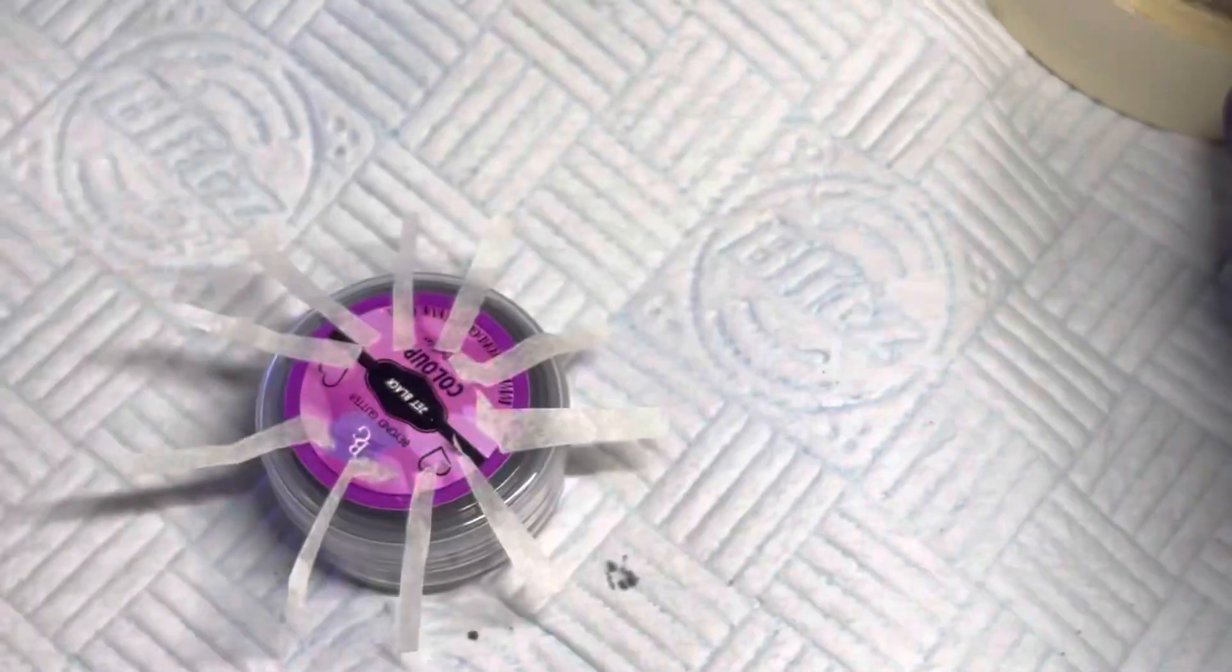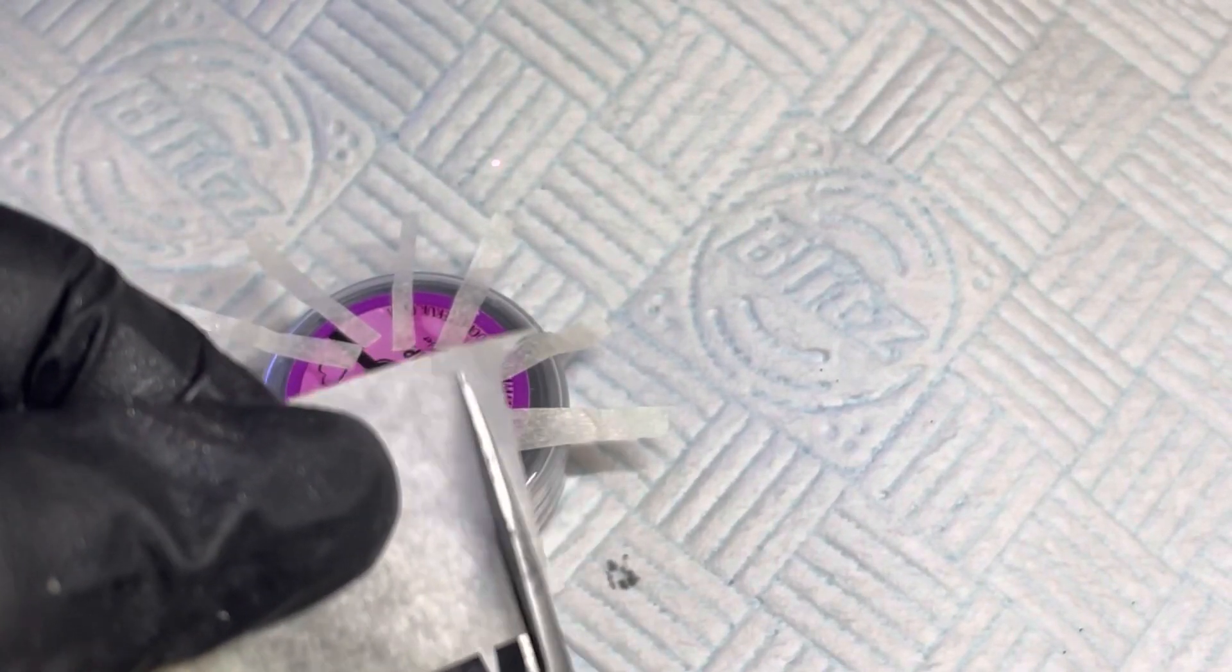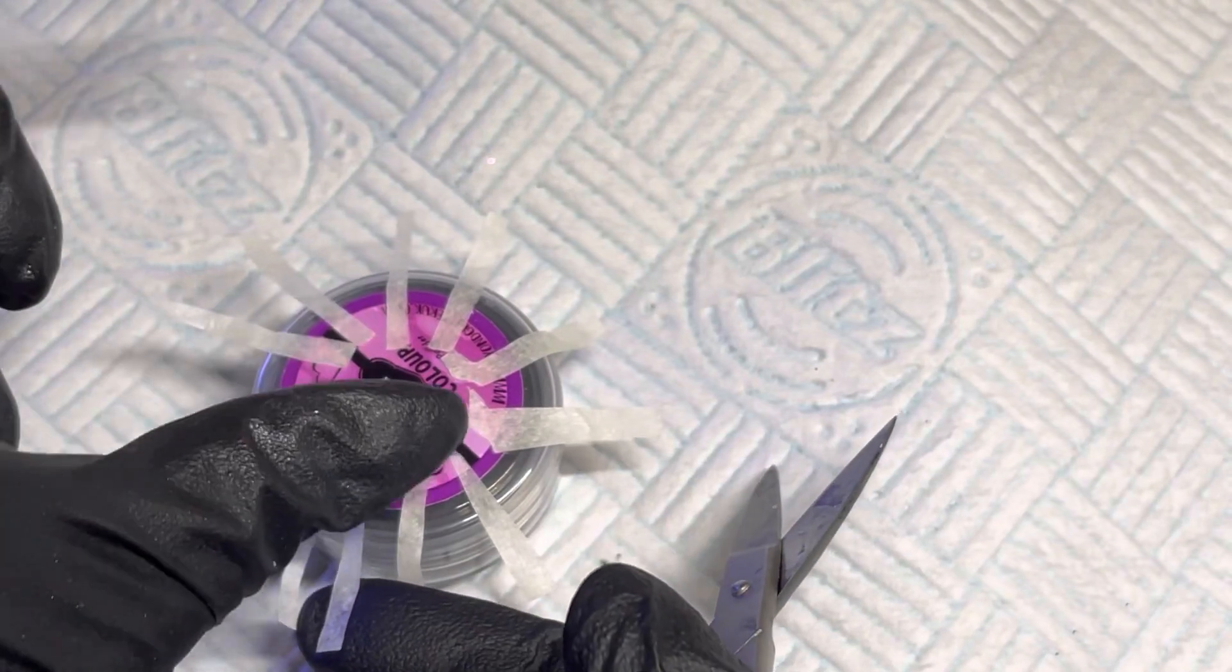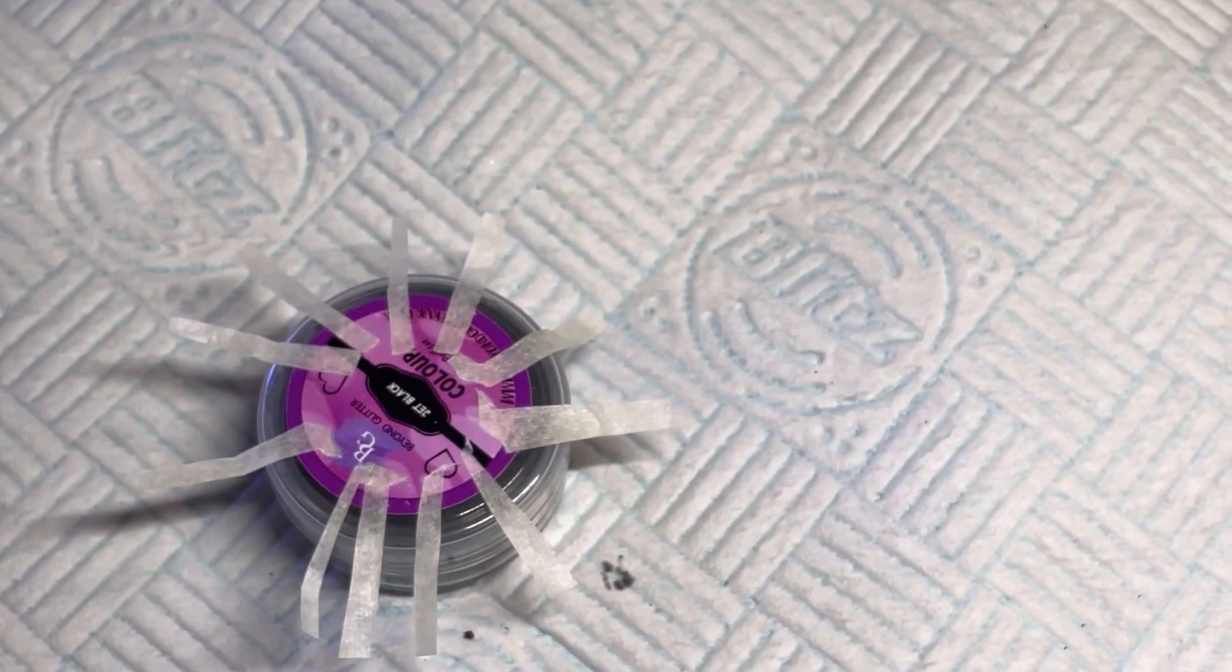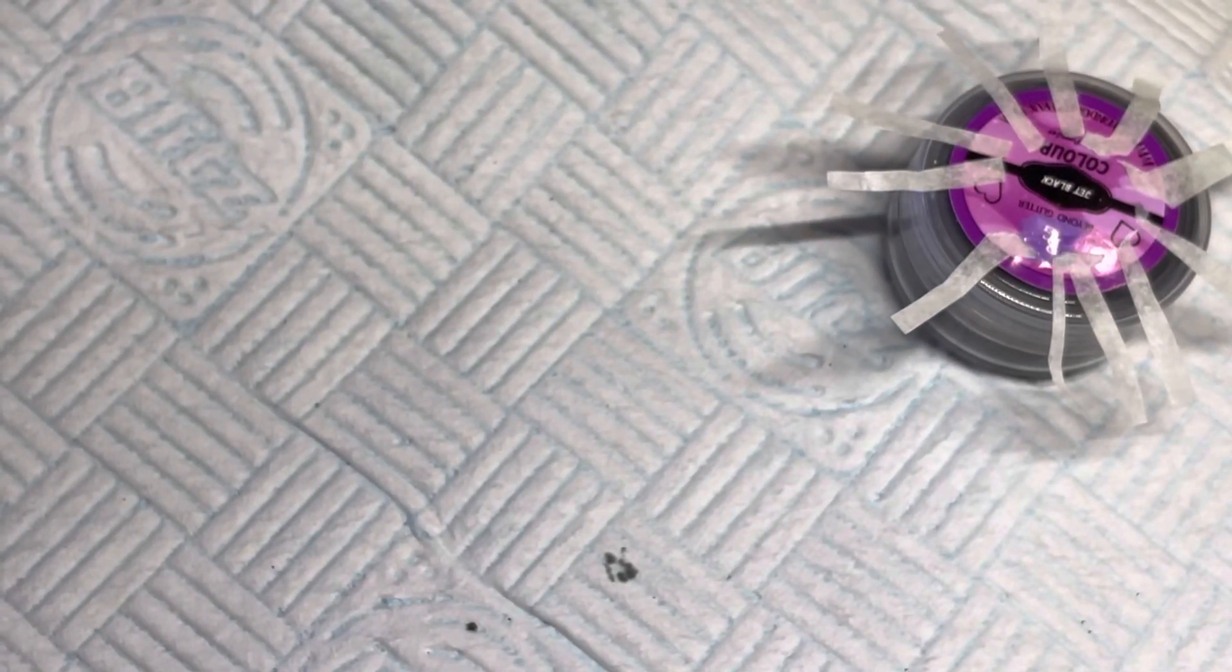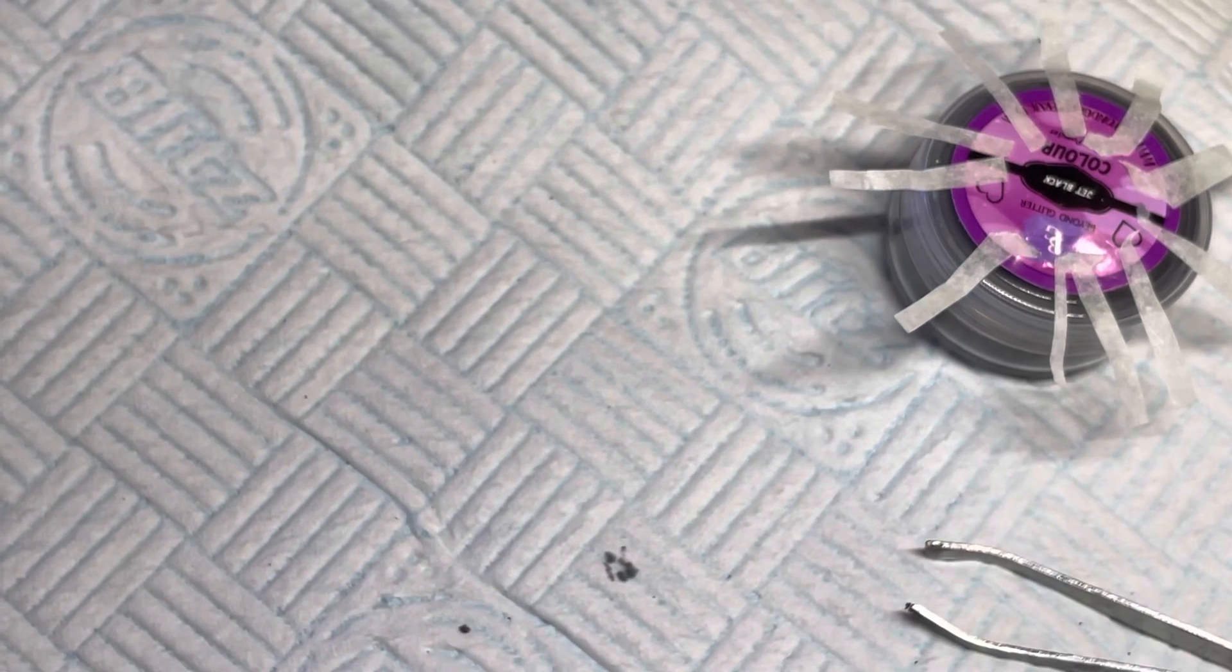I've got some tape on here and all this is is normal masking tape. I've just cut thin strips off of this to use on this nail. I've stuck them on there so they're easier to get to, and then I'm going to use a set of tweezers to pick these up.